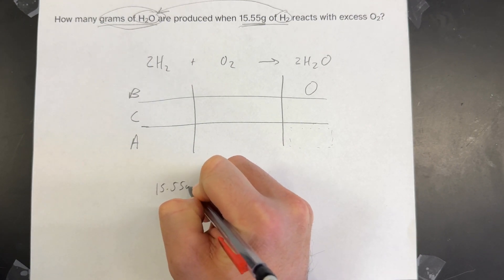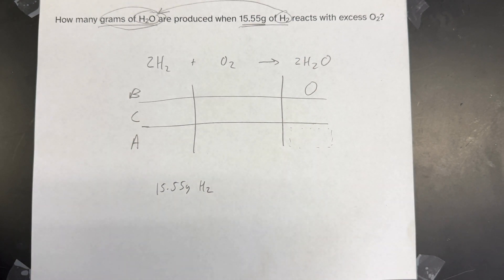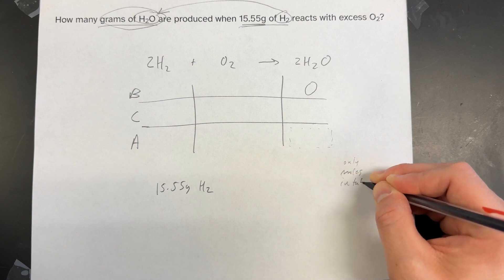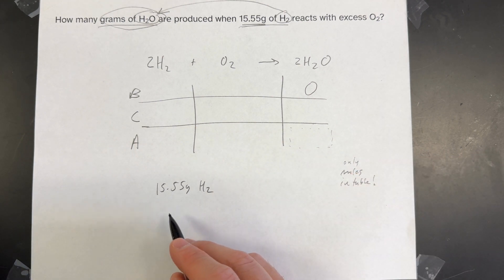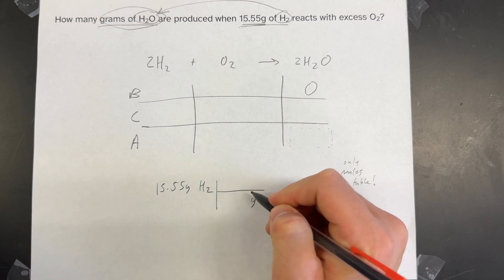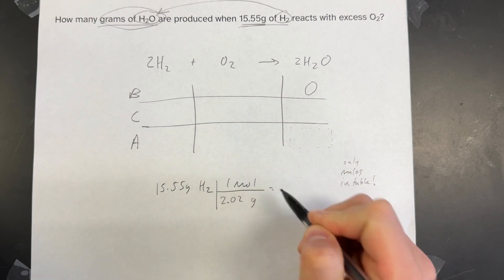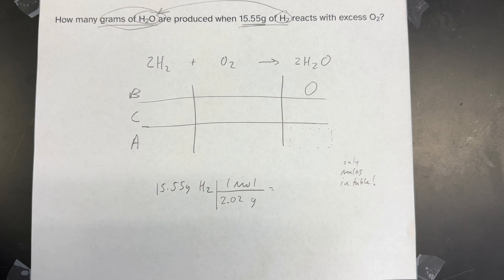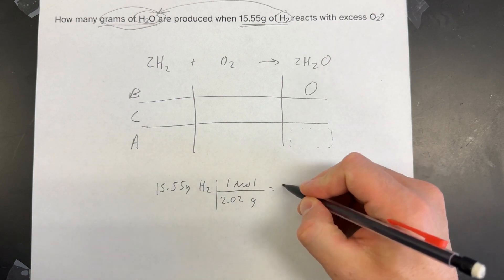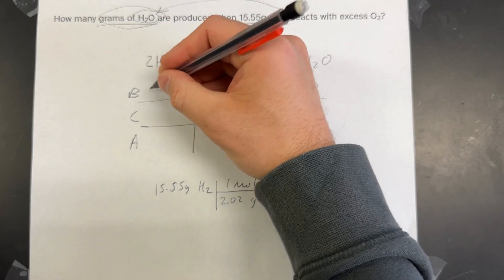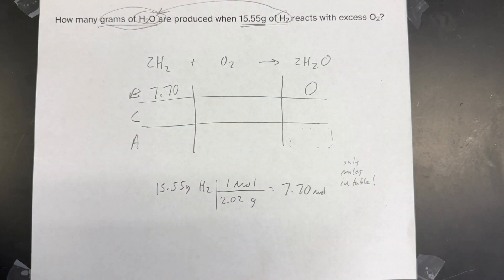I have 15.55 grams of H2. Remember from our other video that you cannot put grams in the table — only moles can go in the table. So I have to convert these grams into moles. The molar mass of H2 is 2.02, so when I do 15.55 divided by 2.02, that gives me 7.70 moles. So I know I have 7.70 moles of H2, and I'm going to put 7.70 in my table.